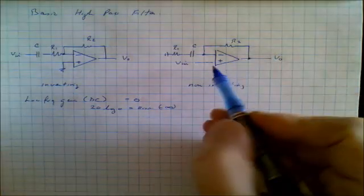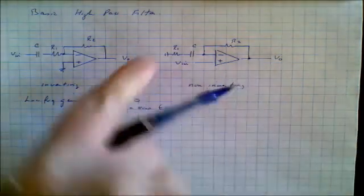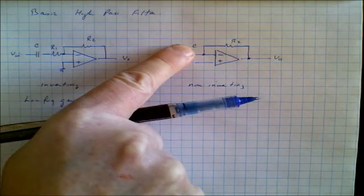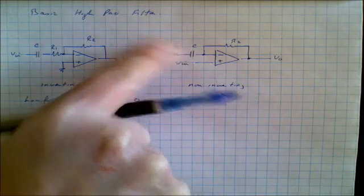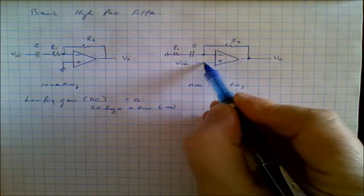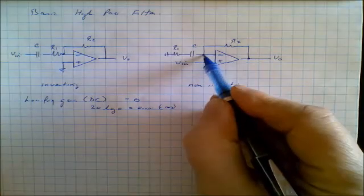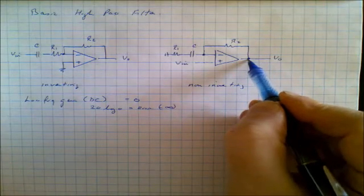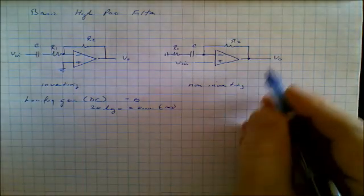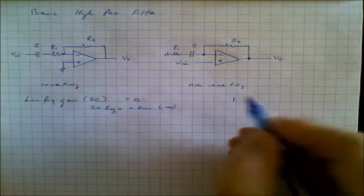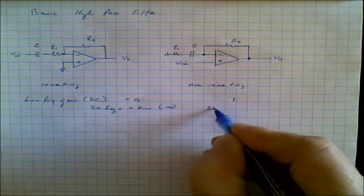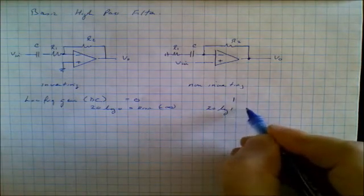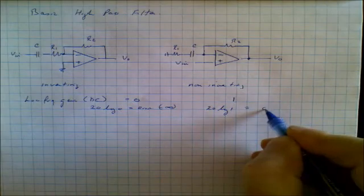If you look at the low frequency in this case, the capacitor again is open circuit. And so if that was the case we could see that VN appears here. VN would also appear here. Since there's no current in the inverting input, VN would appear here. And so the low frequency gain of this circuit is 1, or 20 times the log of 1 is equal to 0 dB.